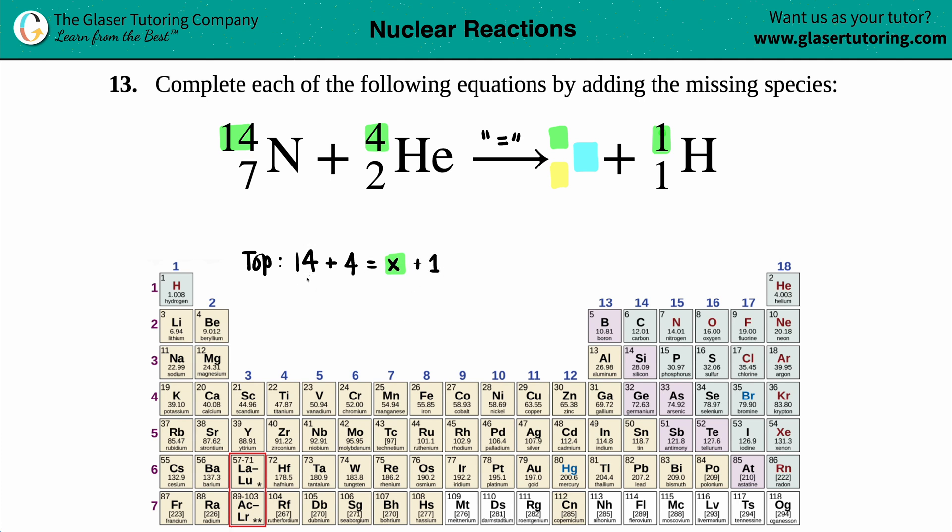14 plus 4 is 18. This is 18 equals x plus 1. We could minus 1 on both sides, and we get x equals 17. So now we know the atomic mass. The atomic mass is going to be a big 17 on the top.